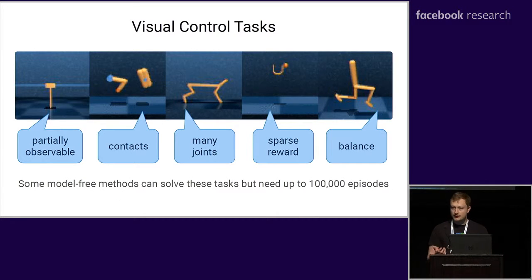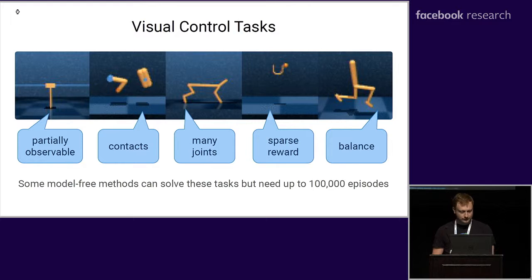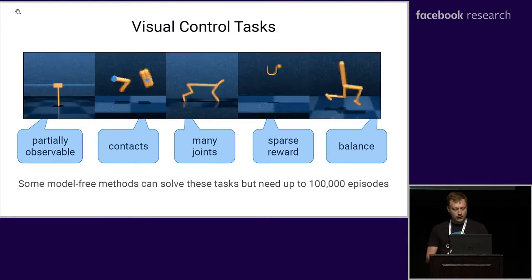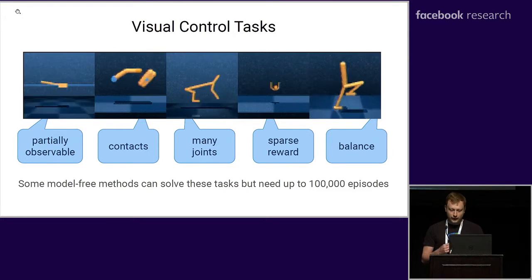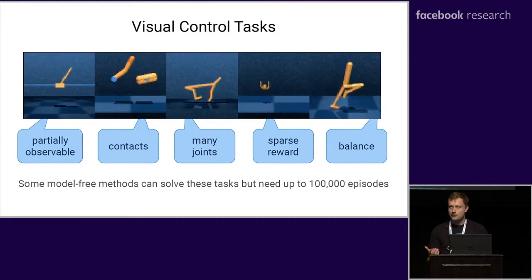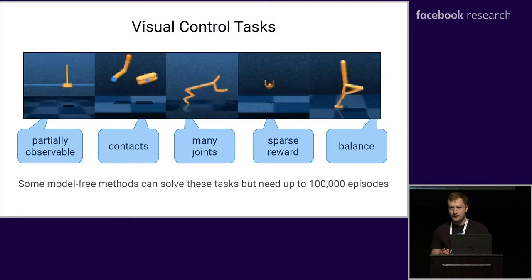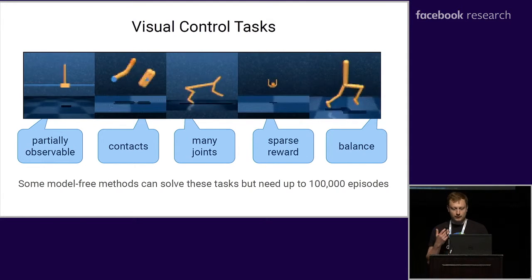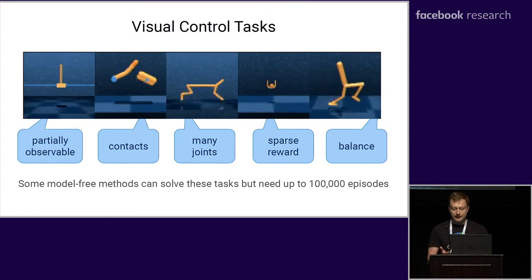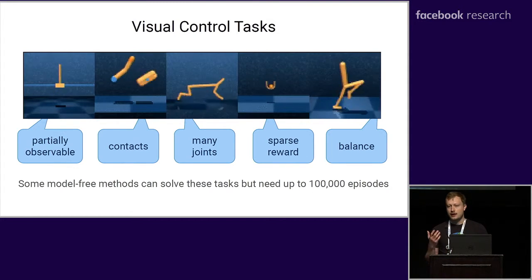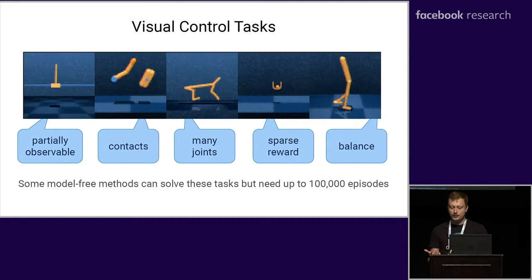We consider six continuous control tasks that pose different challenges, for example partial observability because objects can move out of view, non-linear contact dynamics, high degrees of freedom, and sparse rewards — for example only given when the ball is inside the cup.